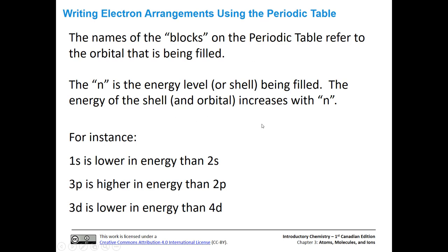The names of the blocks on the periodic table refer to the orbital that's being filled, and n is the energy level or shell being filled — that's the number in front of the orbital letter. The lower the n, the lower the energy. So a 1s orbital is lower in energy than a 2s orbital, a 3p orbital is higher in energy than a 2p, and 3d orbitals are lower in energy than 4d orbitals. N gives you relative energy compared to others, and it's also the shell.